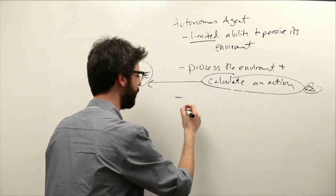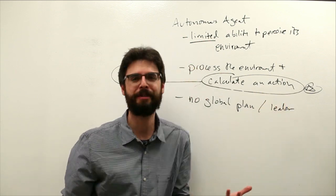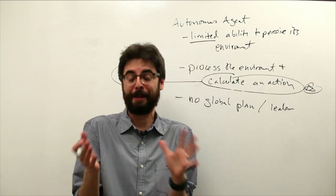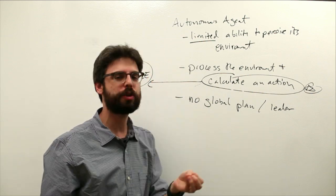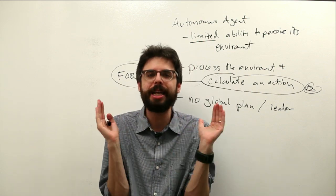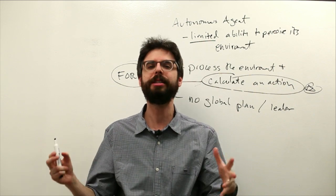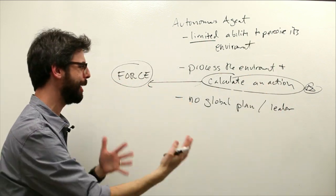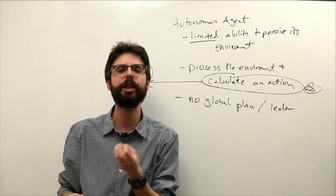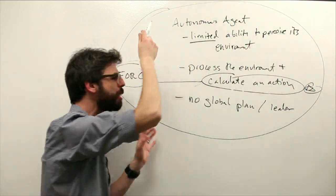The last thing on the list is that there is no global plan or leader. This isn't a hard and fast rule for everything you'll ever build, but as an exercise here, we are building entities that just respond to whatever they can perceive around themselves and make a decision — calculate an action based on that. There isn't some global leader telling them what to do. A true autonomous agent makes its decisions only based on its own perception of the environment.